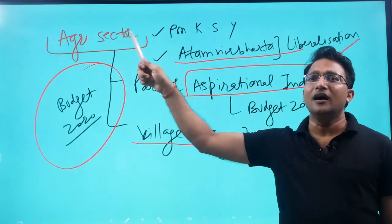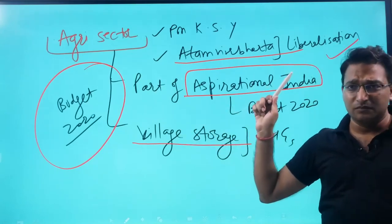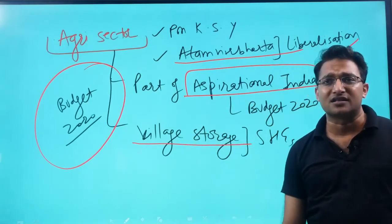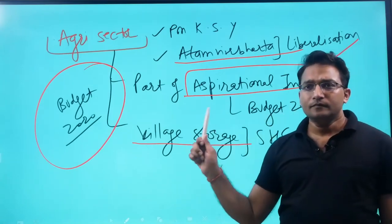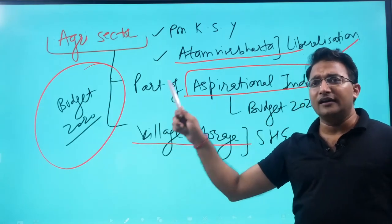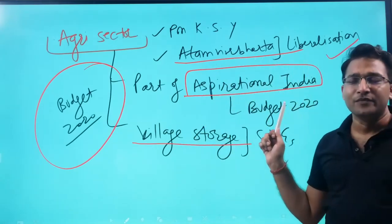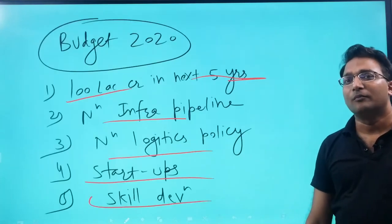In the agriculture sector, we have Pradhan Mantri Krishi Sinchai Yojana and Atmanirbhar package, which has liberalized the agriculture sector. In Budget 2020, it is part of the aspirational India program and village storage scheme by self-help groups.